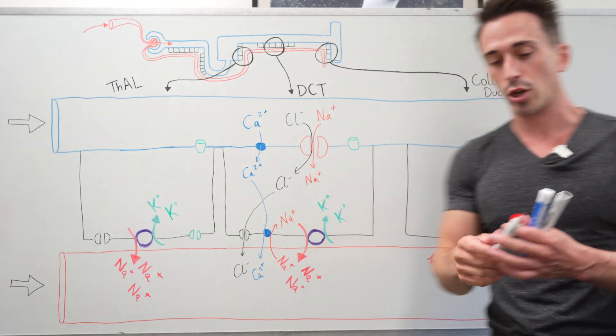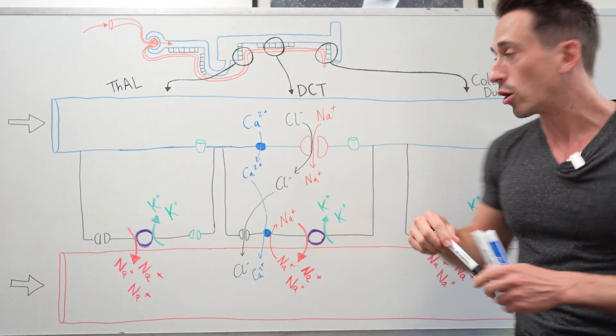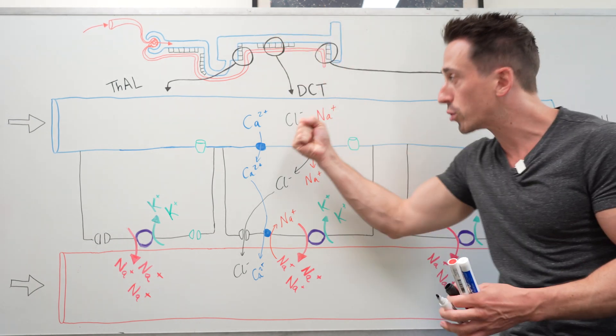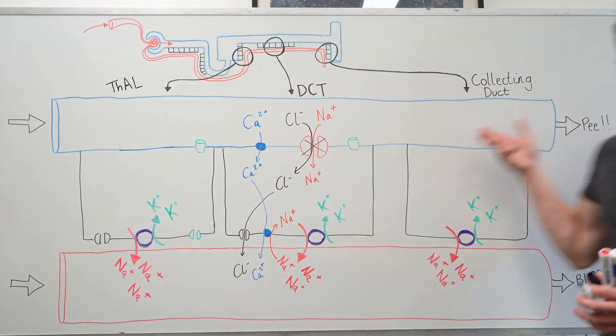Now, thiazide or thiazide like diuretics, what they do is they stop the sodium chloride channel. So these two ions remain in the tubule, pulling water towards it, working as a diuretic.